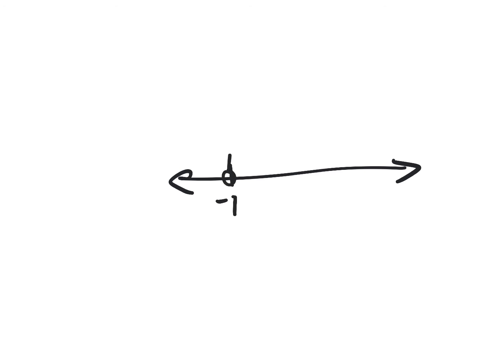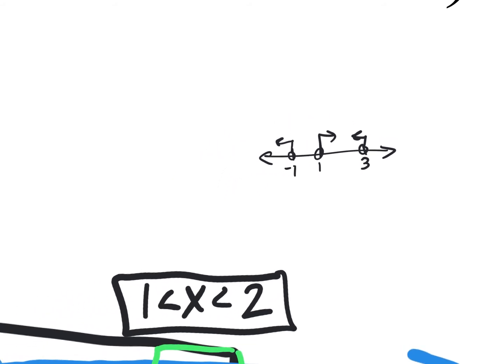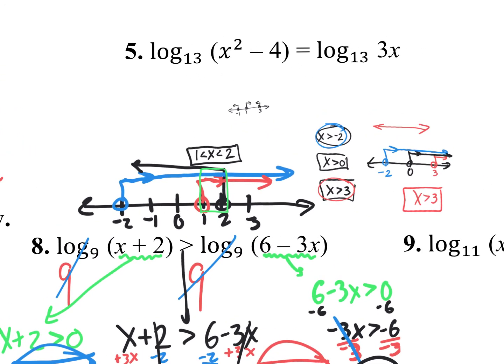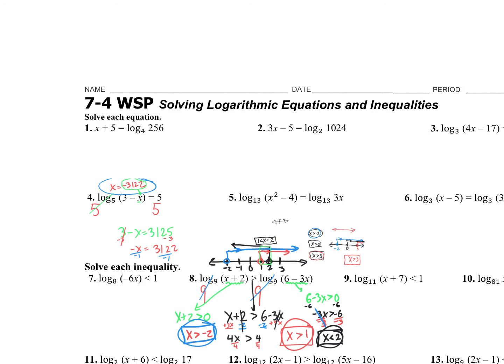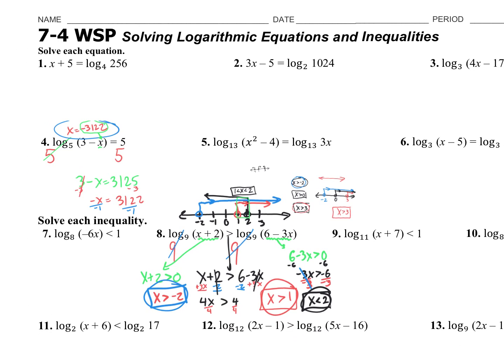Sometimes you're working on a problem and you have three answers where one is less than negative 1 going left, one is greater than 1 going right, and one is less than 3 going left. If you have three parts of your answer and they don't overlap three times, then you would say no solution. So if there is no triple overlap piece, that'll be a no solution.